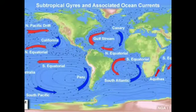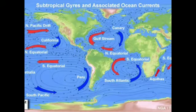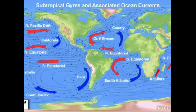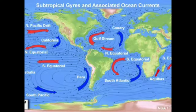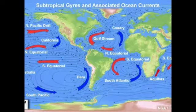What are ocean currents and how are they formed? Large scale movements of water in the ocean in a definite direction are called ocean currents. Ocean currents are like rivers in the oceans, thousands of kilometers in length and sometimes 200 kilometers wide. Most currents have speeds less than or equal to five knots.